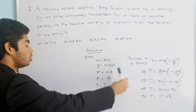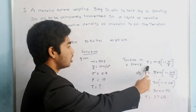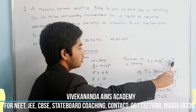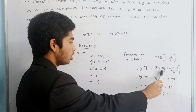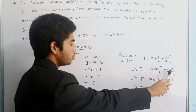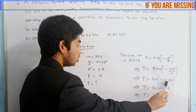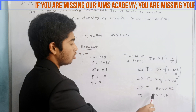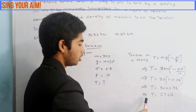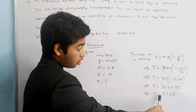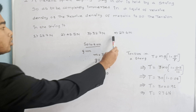We have to find the tension in the string. The formula for tension in a string is: T = mg(1 − σ/ρ). So T = 3 × 10 × (1 − 0.8/10) = 30 × (1 − 0.08) = 30 × 0.92. Therefore T = 27.6 N, which corresponds to the fourth option.